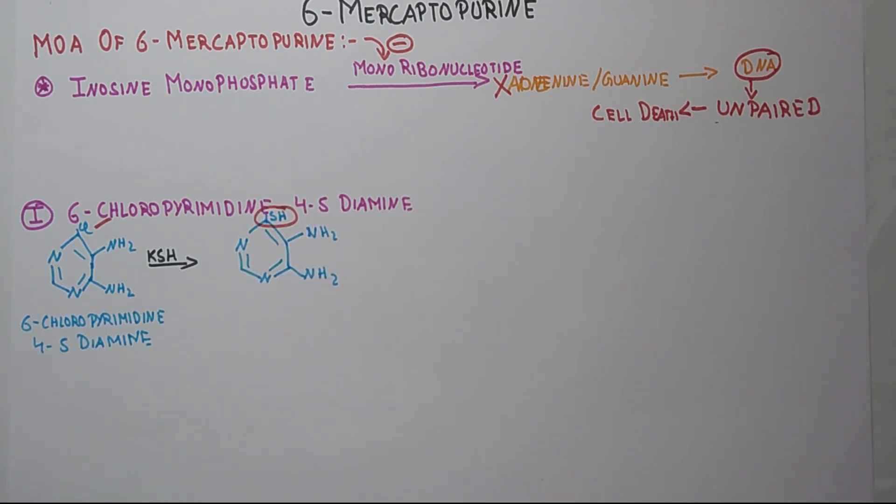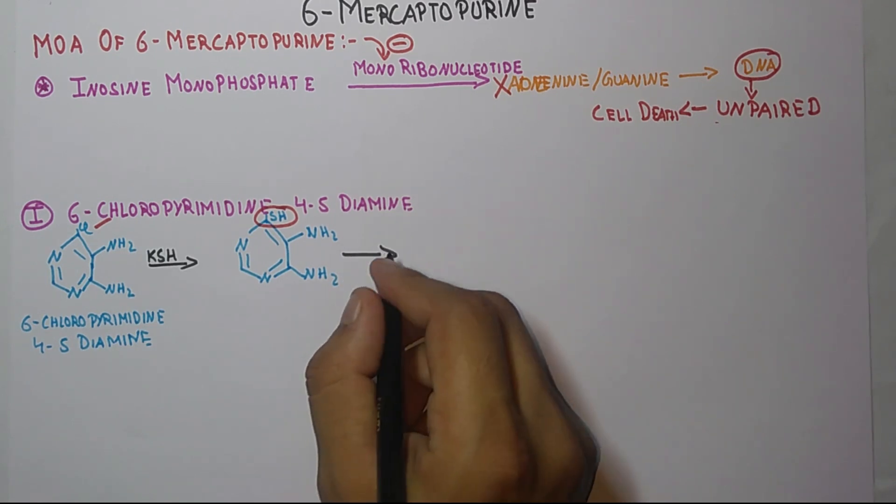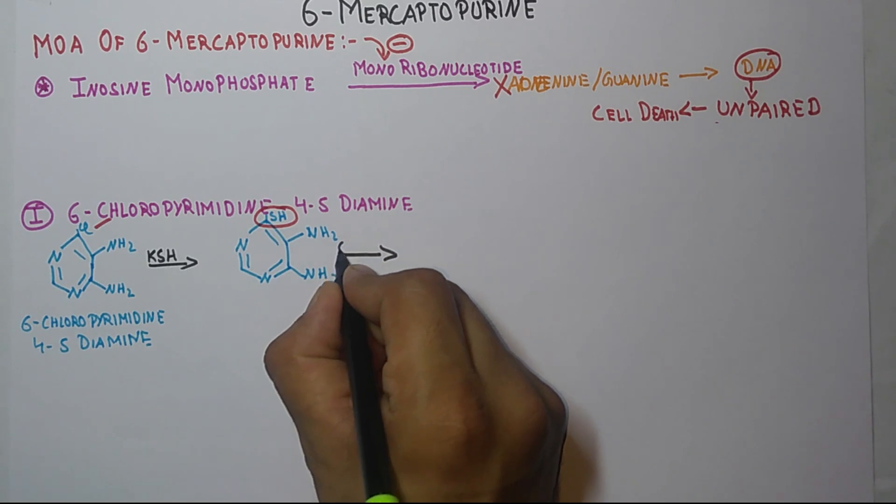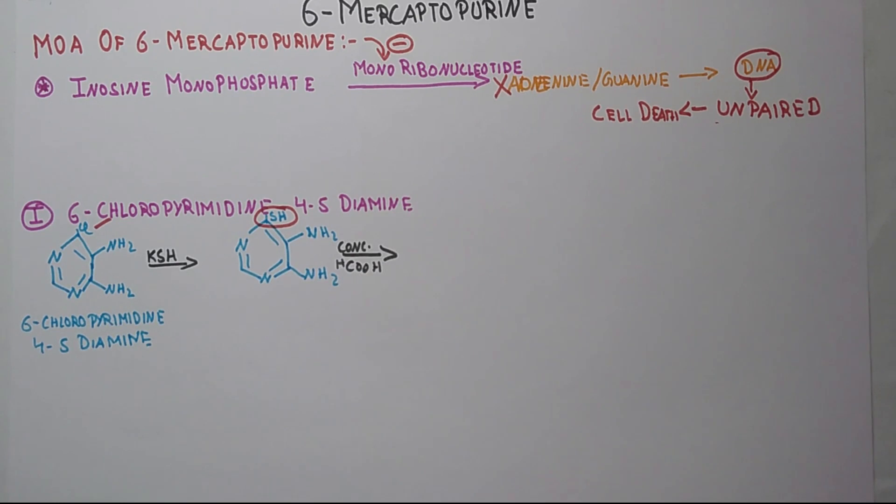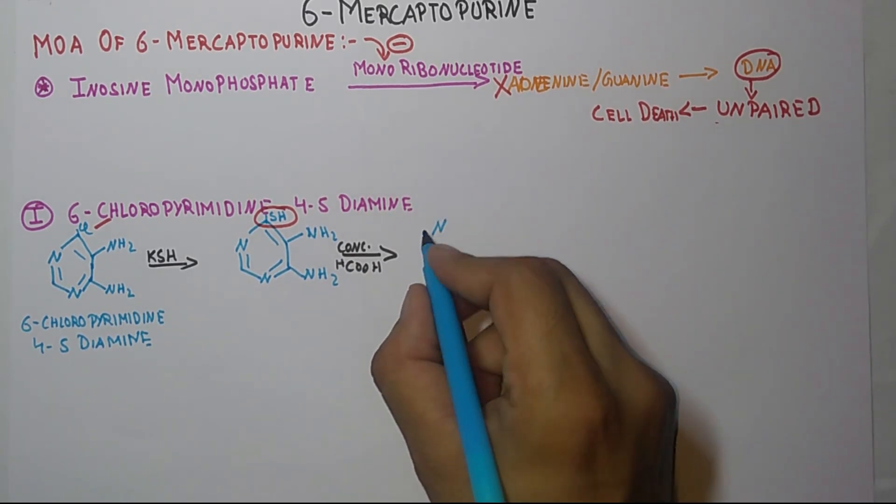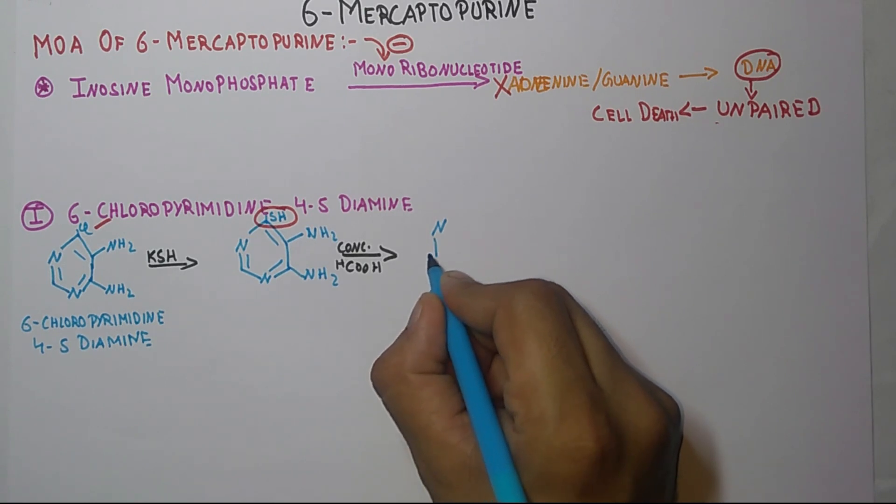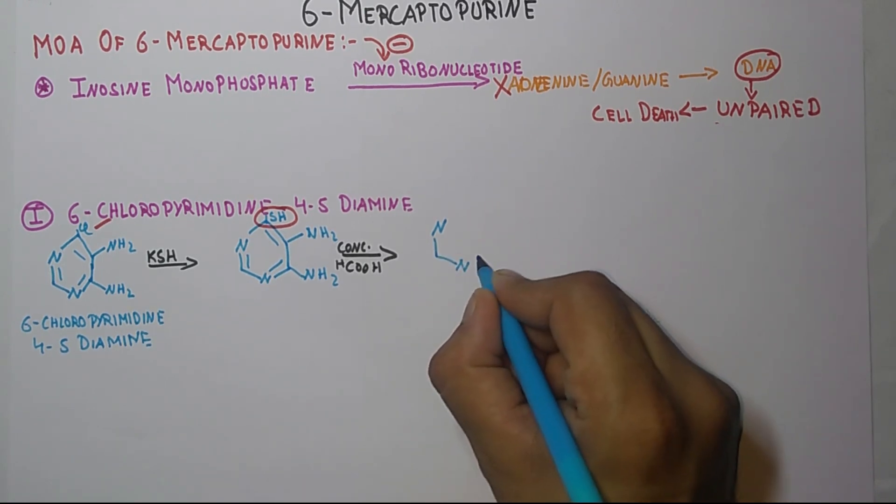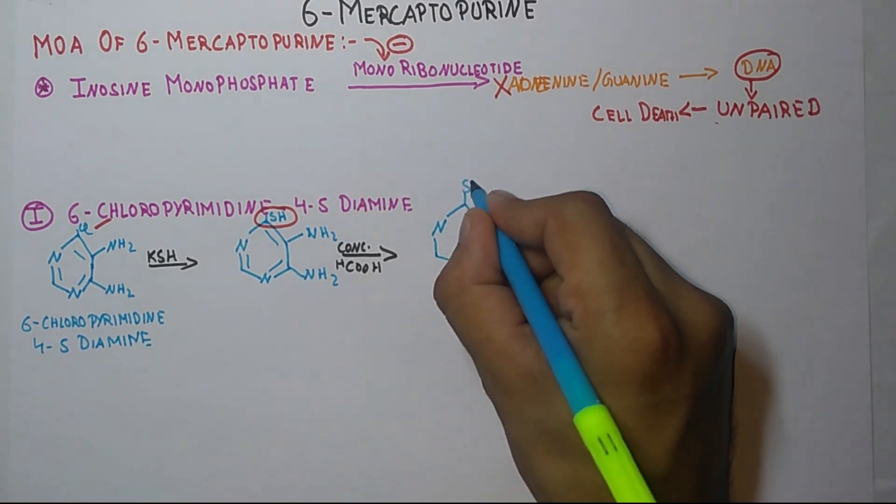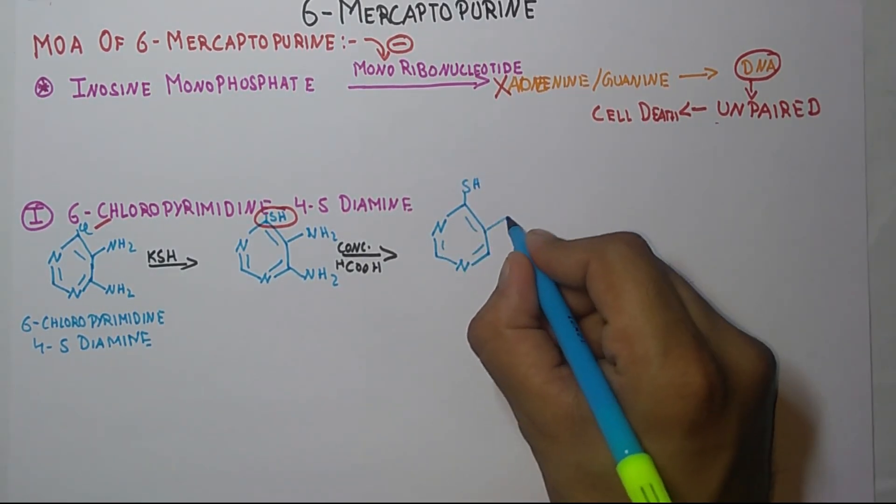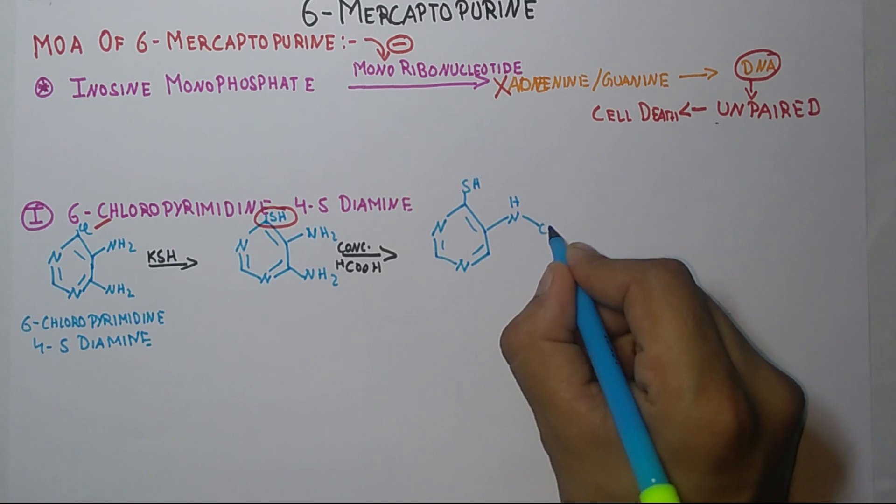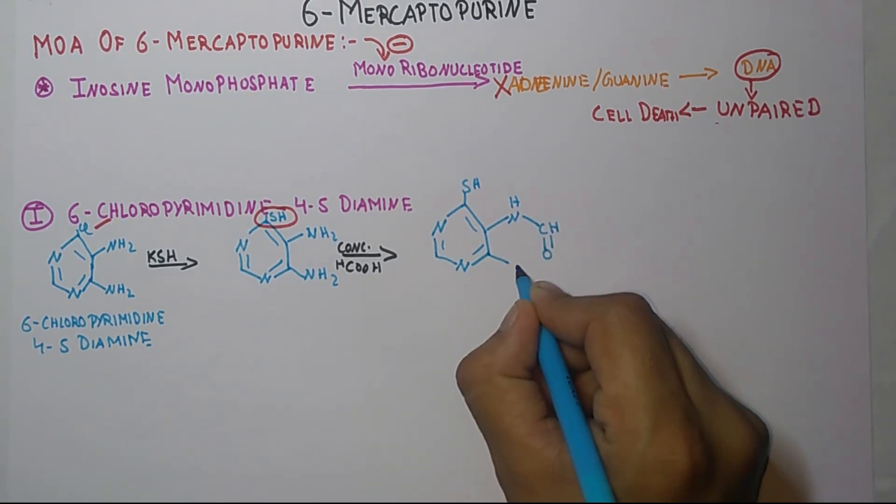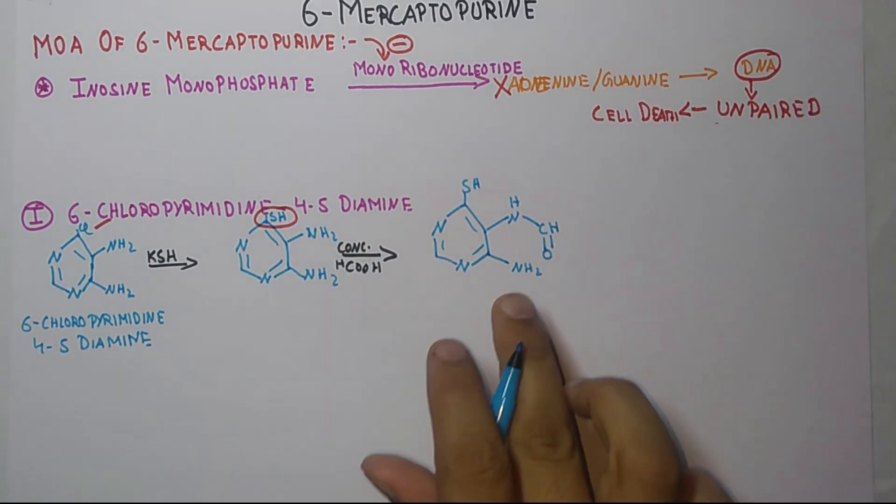Again the next step is in presence of concentrated carboxylic acid. What will be the structure? The structure is this - this is your structure.